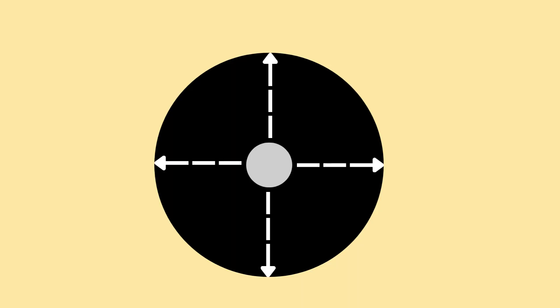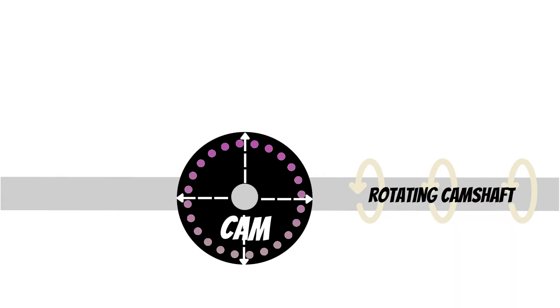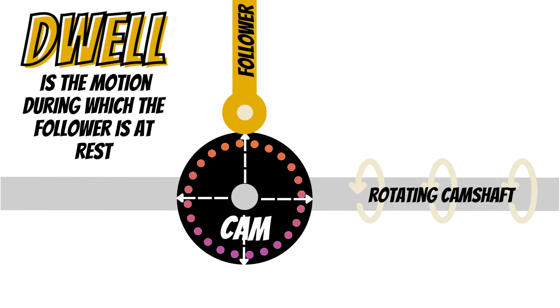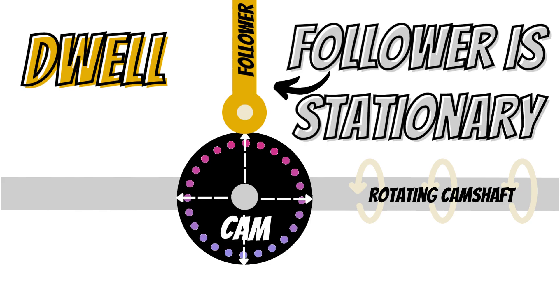So what happens if the pivot is not off-centred? The material would be equal the whole way around the cam. As the camshaft rotates the cam is spinning but with no change in material the follower stays stationary, which is also known as a dwell. With no extra material to force the follower to rise, and no material reducing to cause the follower to fall.